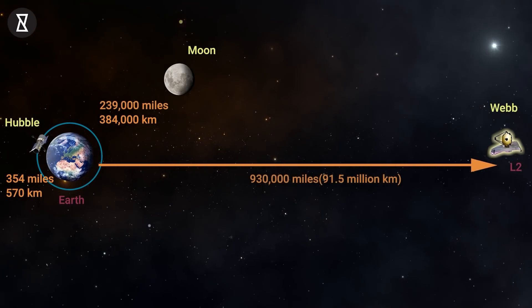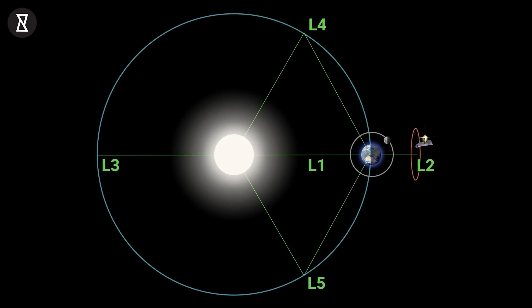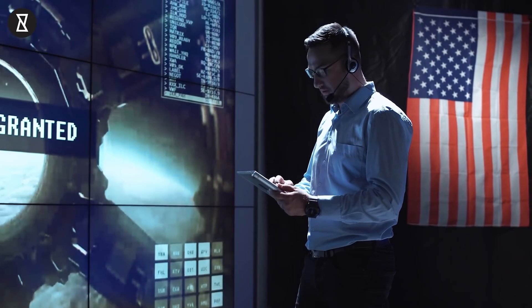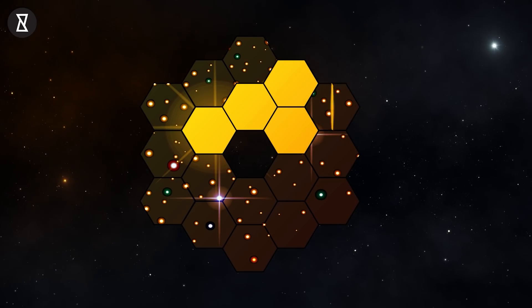Called the Lagrange Point 2, a point at which it can keep the Earth exactly between it and the Sun at all times. Now, the team is preparing to power on the telescope's many scientific instruments and finally achieving first light.